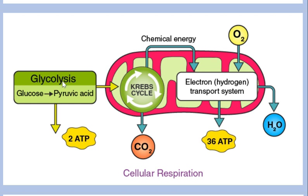The first process is glycolysis, which occurs within the cells and mitochondria. In glycolysis, glucose — or carbohydrates — is converted into pyruvic acid, and two ATP molecules of energy are released.